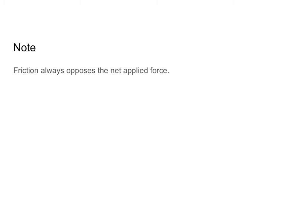Most of the time, rather than having two people pulling on something, you'll have an applied force going in one direction and friction going in the other. For example, perhaps Bill is pushing the chair to the right with an applied force, and there's going to be a frictional force between the chair and the floor going in the opposite direction. The key is that friction is always going to oppose the applied force — if my applied force is to the right, my friction is to the left, and vice versa.